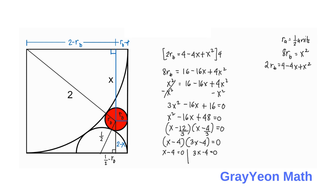We have x equals 4 and x equals 4/3. x equals 4 is invalid because 2 minus x would equal 2 minus 4 equals negative 2, and there is no negative distance. Therefore, we use x equals 4/3.